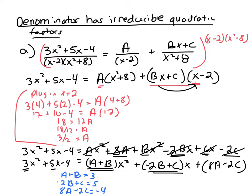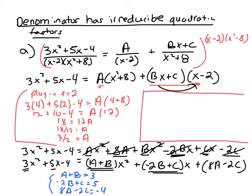Now I already know that a equals 3 halves from earlier, so I can plug that directly into the first equation rather than using elimination. So 3 halves plus b equals 3. Subtracting 3 halves from both sides gives b equals 3 minus 3 halves. Since 3 is 6 halves, that's 6 halves minus 3 halves, so b equals 3 halves.